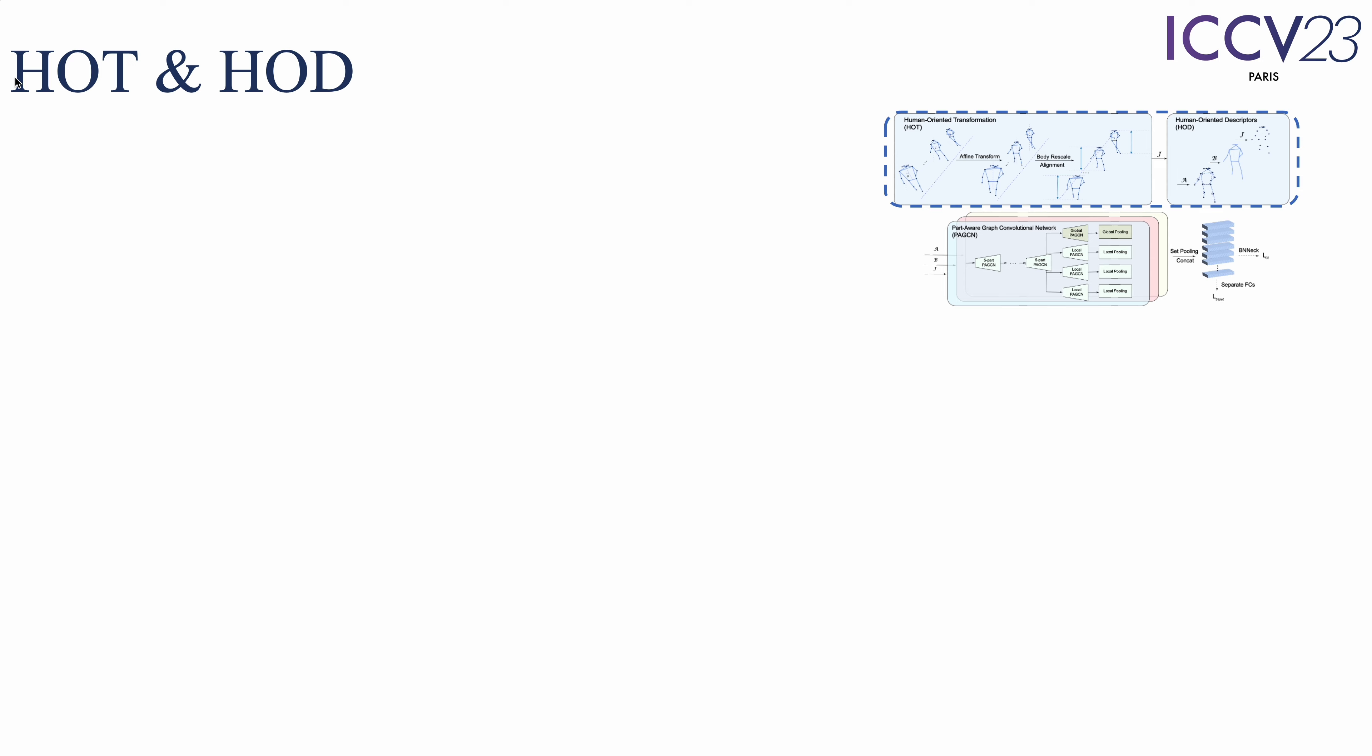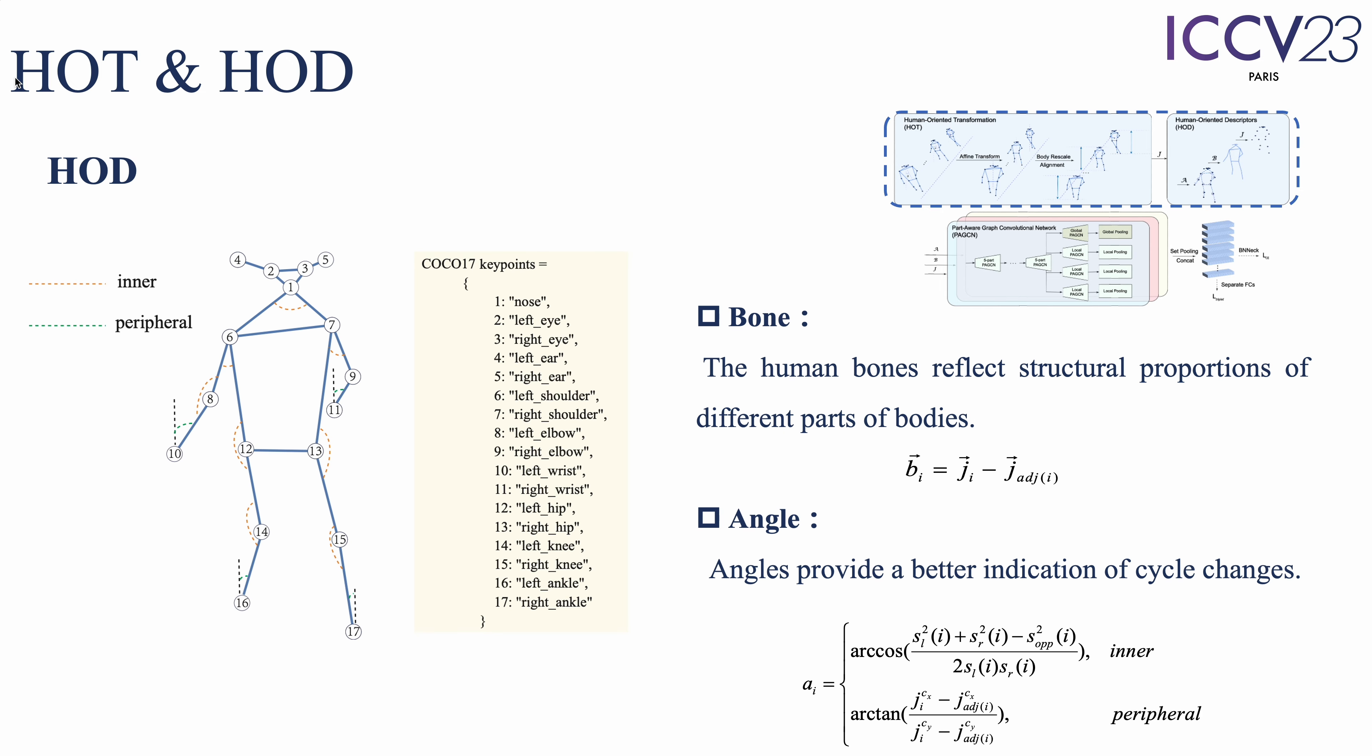Except for the normalized joint feature, we explicitly add information of bone and angle to learn discriminative gait signatures. Unlike previous works using angles between bones and the horizontal or vertical line, we design a human-oriented angle-calculating method including inner angles and peripheral angles.